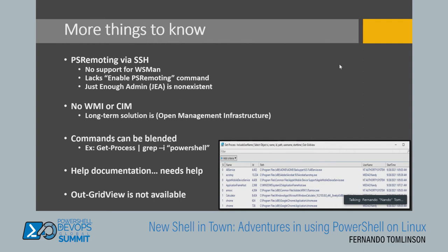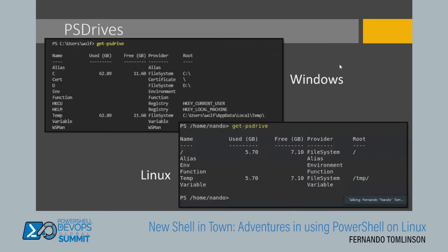Out-GridView is no longer a thing in PowerShell Core, which pained me — it was an Excel-like pop-out graphical interface great for slicing and dicing data on the fly. Regarding PS drives on Windows, there are a number of providers and drives available; on Linux there are fewer. Some of that is understandable — for example, there's no registry in Linux — but be cognizant if you're accustomed to certain aspects already being mapped out.